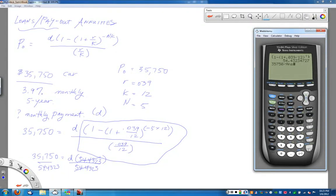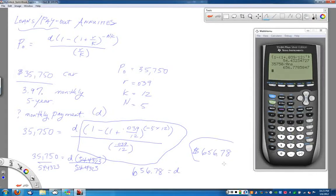$35,750 for the car divided by that 54.43 number. And since that's the last answer I had on my calculator, I can just use our little shortcut. Hit enter and I come up with 656.78 when I round as D. And so, that means that my monthly payment for that car payment is $656.78.